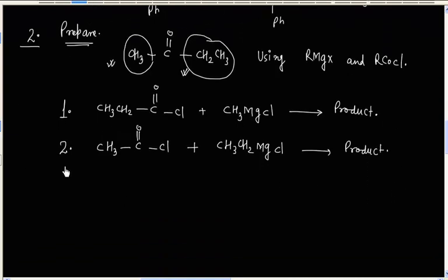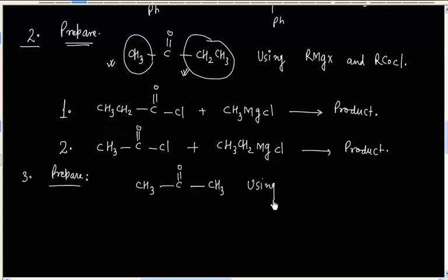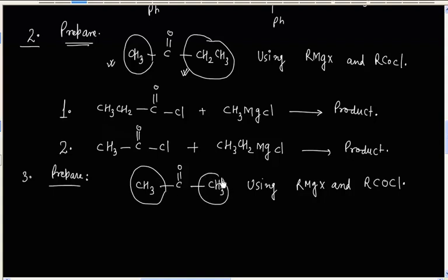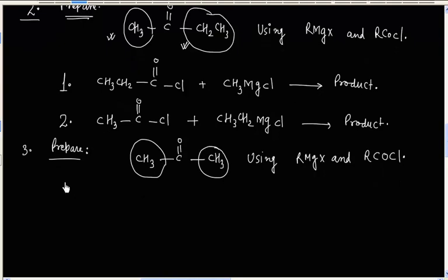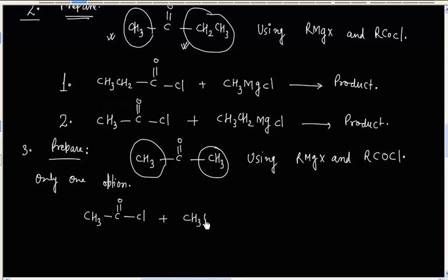Let us say we are asked to prepare a symmetric ketone using Grignard reagent synthesis, and we are given both Grignard reagent and acid chloride. In this case we will have only one option, because taking either side as the Grignard reagent gives the same result. That is, CH₃COCl plus CH₃MgCl, and this will give the desired symmetric ketone.